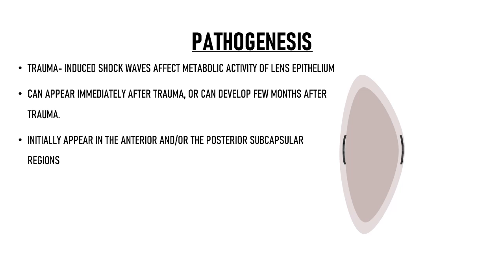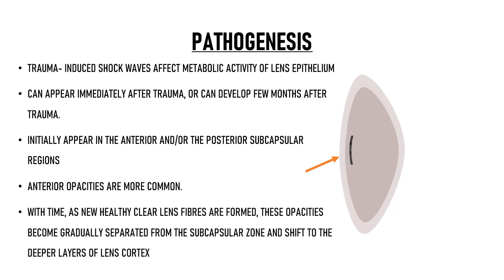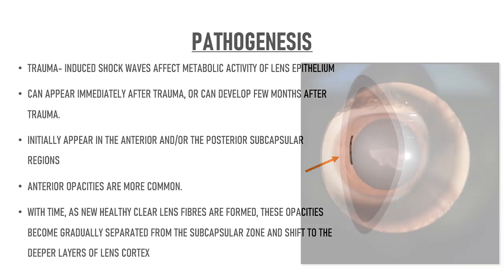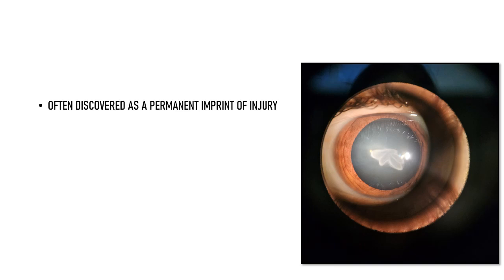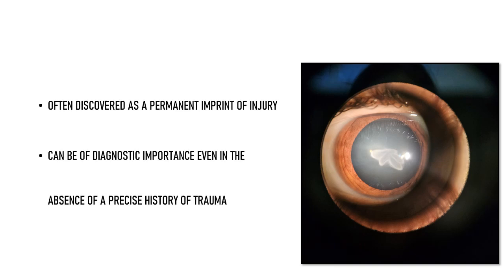The opacification of rosette cataract initially appears in the anterior and/or the posterior subcapsular regions, so it can be an anterior or a posterior rosette cataract depending on its location. Anterior opacities are more common. However, with time, as new healthy clear lens fibers are formed, these opacities become gradually separated from the subcapsular zone and shift to the deeper layers of the lens cortex. Rosette cataract is often discovered as a permanent imprint of the injury, and it can be of diagnostic importance even in the absence of a precise history of trauma.